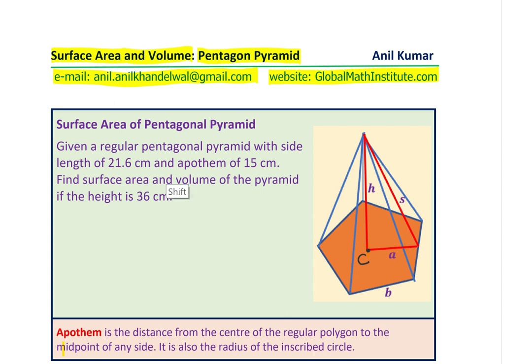Let's begin with understanding the term Apothem. Apothem actually is the distance from the center of the polygon to any of its sides, the shortest distance.